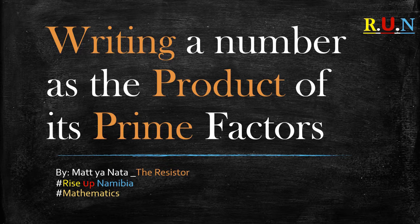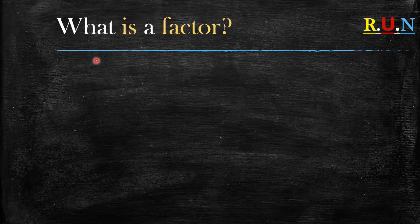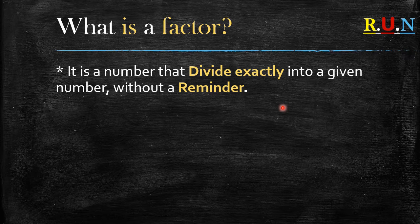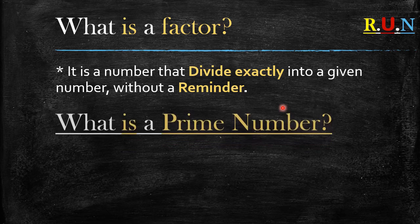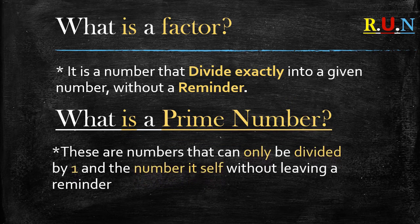Let's start with the definitions. What is a factor? A factor is a number that divides exactly into a given number without leaving a remainder. What is a prime number? A prime number — these are numbers that can only be divided by one and the number itself without leaving a remainder. For example, five can only be divided by five and one without leaving a remainder.